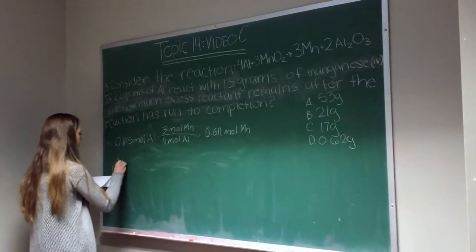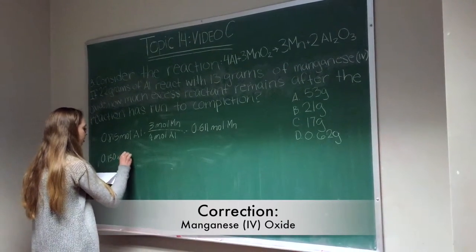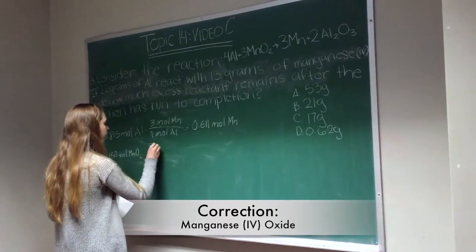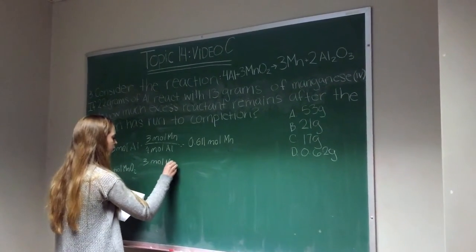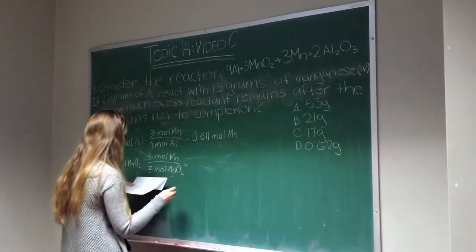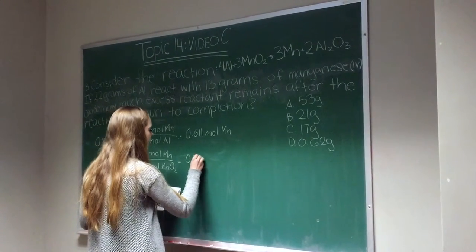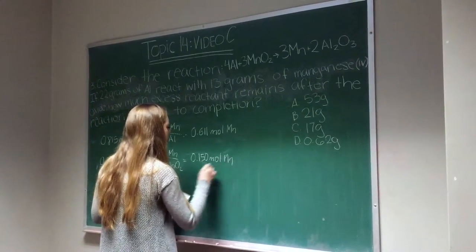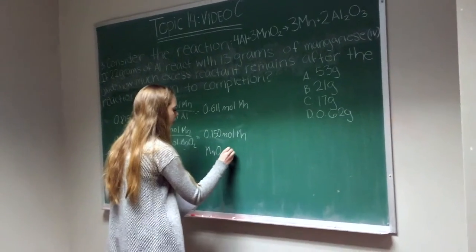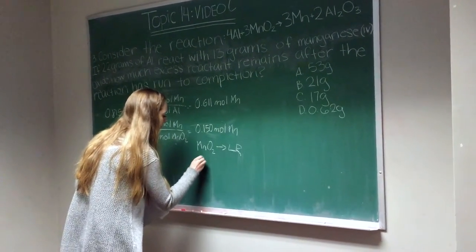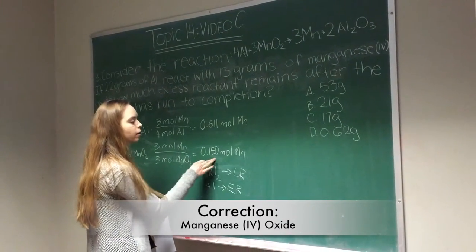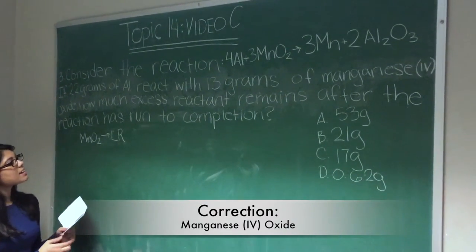Then we'll take the 0.150 moles of manganese oxide and apply the ratio of manganese to manganese oxide, which is 3 to 3, or 1 to 1. This gives us 0.150 moles of manganese. Based on this, manganese oxide is our limiting reagent and aluminum is our excess reagent, because manganese oxide produces a smaller amount of moles of manganese.